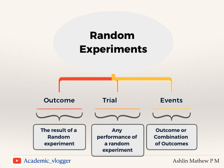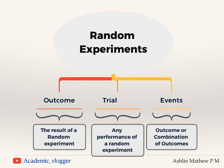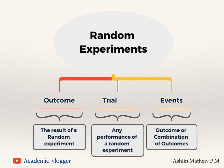An important term is 'event' — the outcome or a combination of outcomes is called an event. For example, if I am throwing a die and I want an even number, the possible outcomes are two, four, or six. If I throw the die and get a two, that is an event; if I get a four, that is also an event; and if I get a six, that is also an event. That is how we define an event.